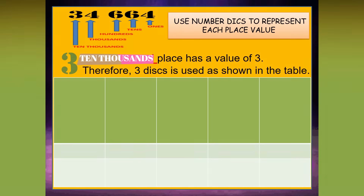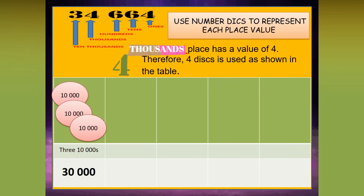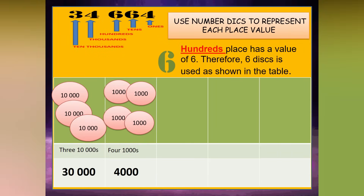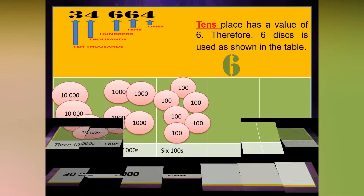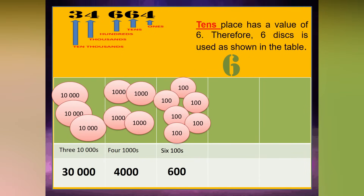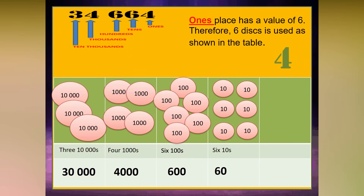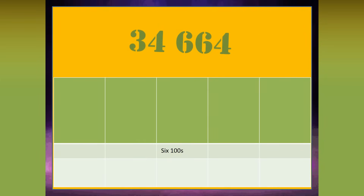The 10,000s place has a value of 3. Therefore, 3 discs are used as shown in the table. The 1,000s place has a value of 4. Therefore, 4 discs are used as shown in the table. The 100s place has a value of 6. Therefore, 6 discs are shown in the table. The 10s place has a value of 6. Therefore, 6 discs are used as shown in the table. The 1s place has a value of 4. Therefore, 4 discs are used as shown in the table.